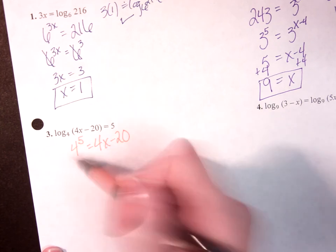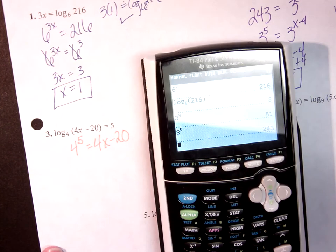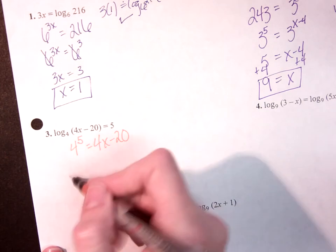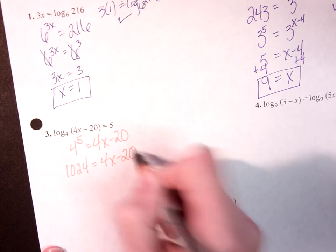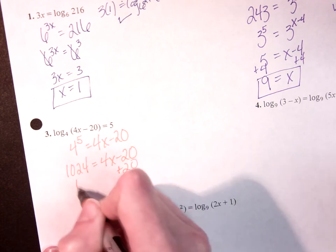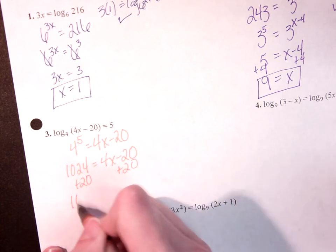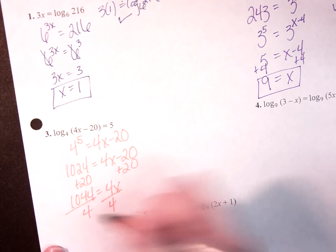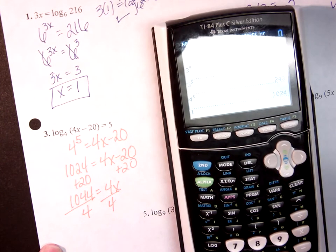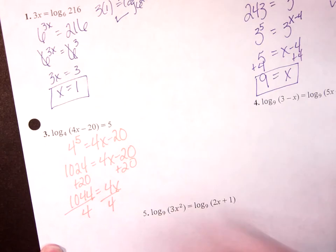Because this says 4 to the 5th equals 4x minus 20. So I just need to calculate 4 to the 5th, so I can do 4 times 4 times 4 times 4, but we're kind of past that. 4 to the 5th, 1024, equals 4x minus 20. Solve, 12, and 1044 divided by 4 is 261, x equals 261.